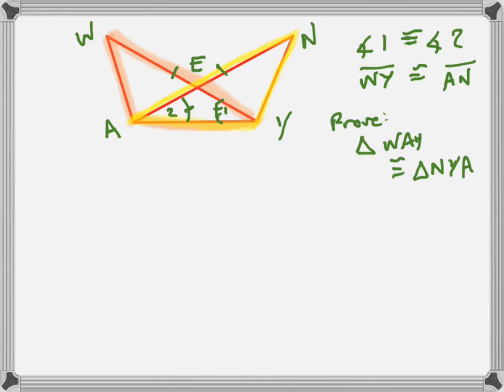Let's come up with a game plan first. I already have an angle and I have a side, so I need to either find another angle, in which case I could use angle-side-angle or angle-angle-side, or I need to come up with another side, in which case I could use side-angle-side.